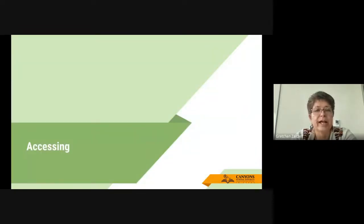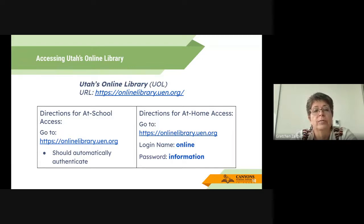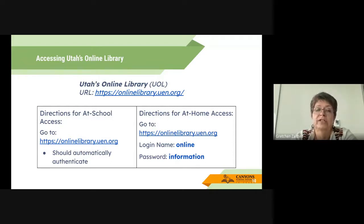So we're going to talk about accessing first. The URL for Utah's online library is simply onlinelibrary.uen.org. When you are on campus and you click on the URL, it should automatically authenticate. However, if you're off campus or you and your students are at home, the login is 'online' and the password is 'information'.